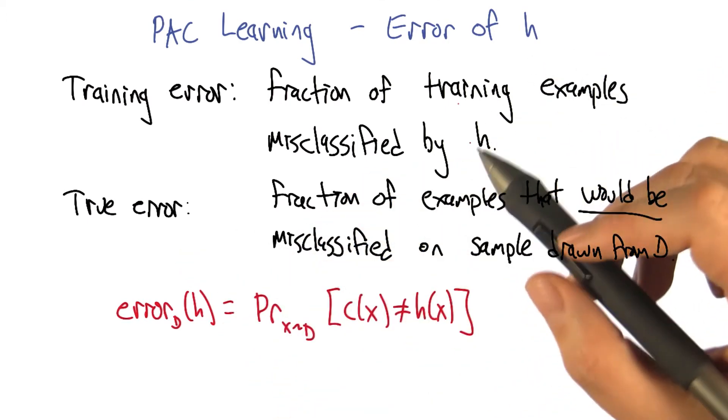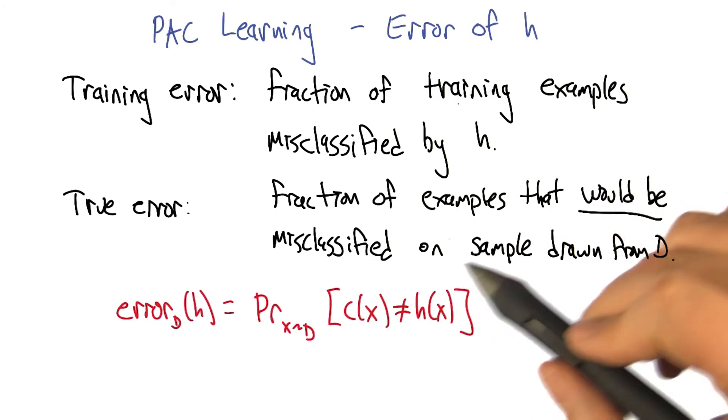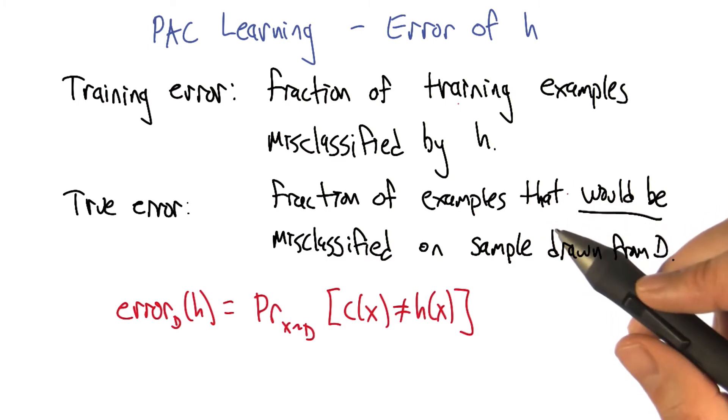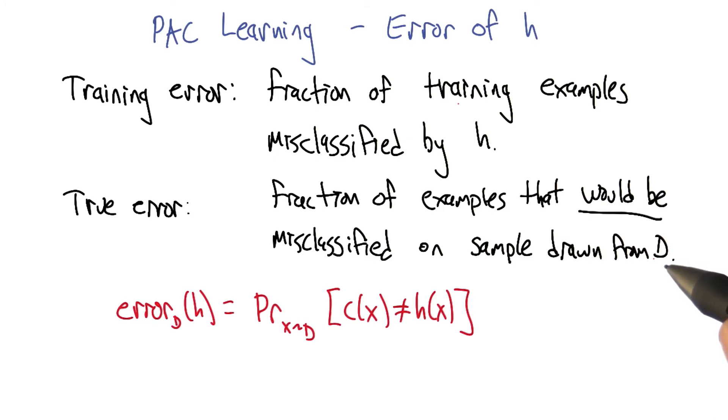All right, now the true error is actually the fraction of examples that would be misclassified on a sample drawn from D in essentially the infinite limit. So what is the probability that a sample drawn from D would be misclassified by some hypothesis H?